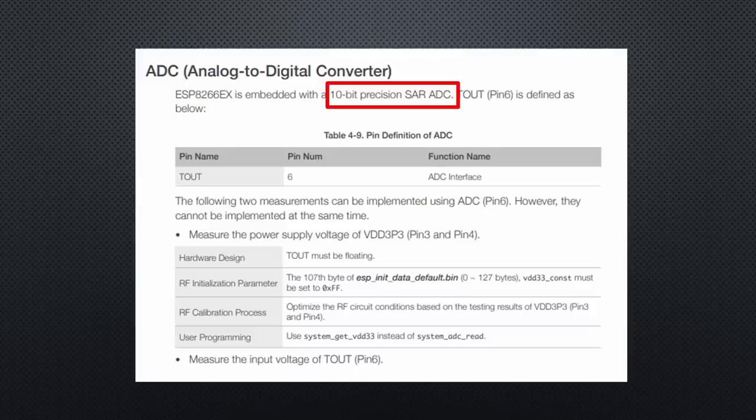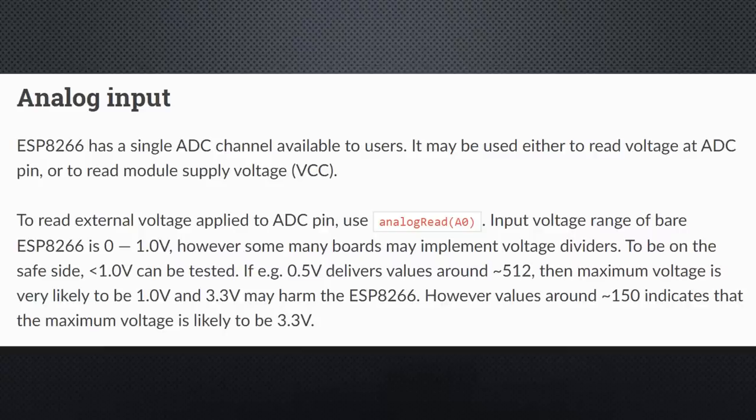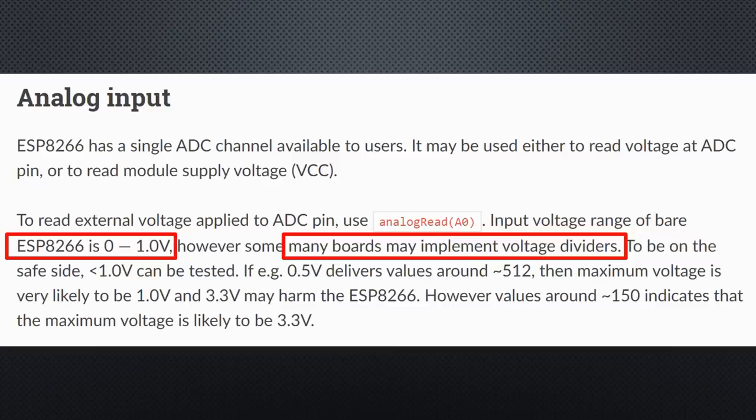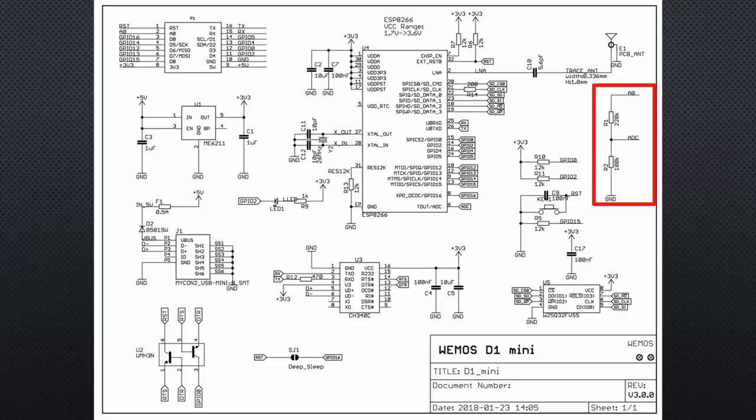Now we go on with the ESP8266. It also has a 10-bit ADC without multiplexer. So it has only one input. And essential, its initial range is only up to 1 volt, which is vital to know. Fortunately, many board manufacturers extend its range to 3.3 volts.